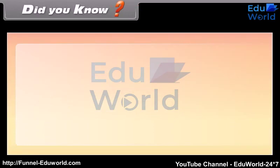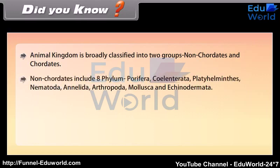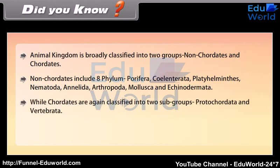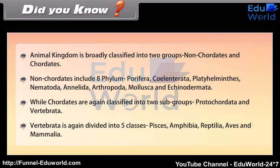Animal kingdom is broadly classified into two groups: non-chordates and chordates. Non-chordates include 8 phyla: Porifera, Coelentrata, Platyhelminthes, Nematoda, Annelida, Arthropoda, Mollusca, and Echinodermata. Chordates are again classified into two subgroups: Protochordata and Vertebrata. Vertebrata is again divided into five classes: Pisces, Amphibia, Reptilia, Aves, and Mammalia.